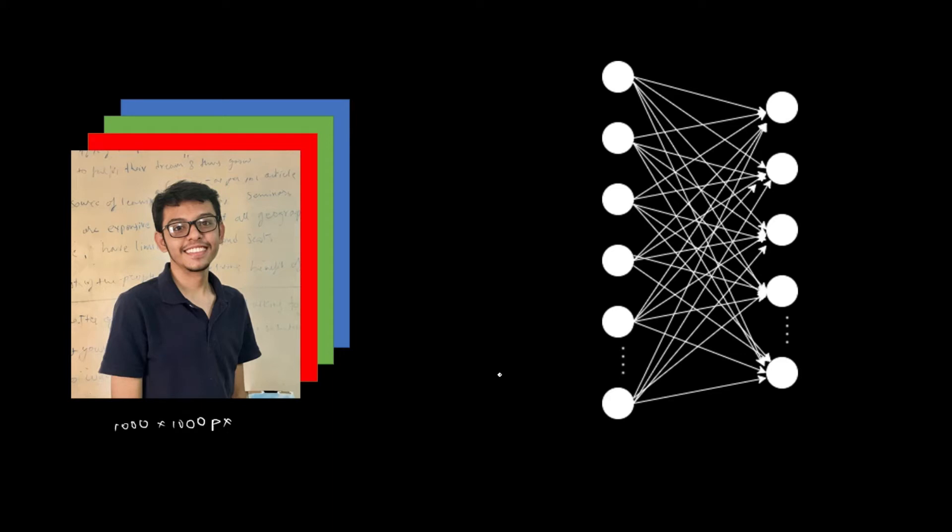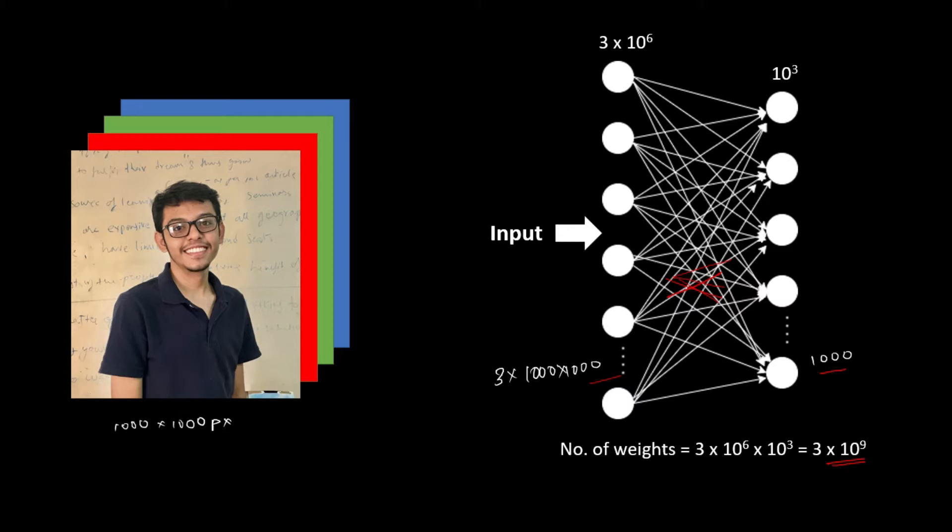Thus, the total number of input features in this neural network will be 3 x 1000 x 1000 which will be equal to 3 million input features. And let's say the first hidden layer in our neural network has only 1000 number of features. Then the total number of connections or the weight parameters between these two layers will be this multiplied by this which will be 3 billion weight parameters. And these are a lot of parameters to train and thus the number of operations performed will be too large and our CPU or GPU might not be able to handle it properly.